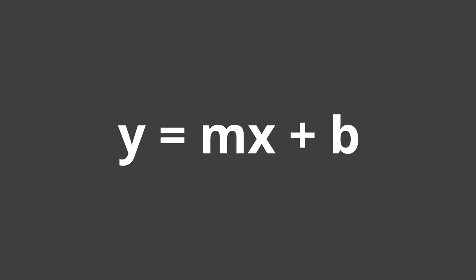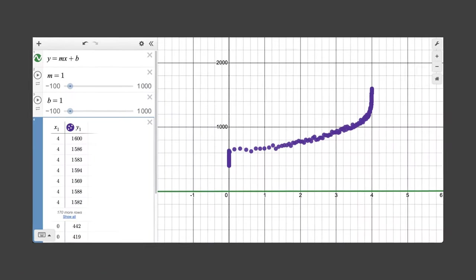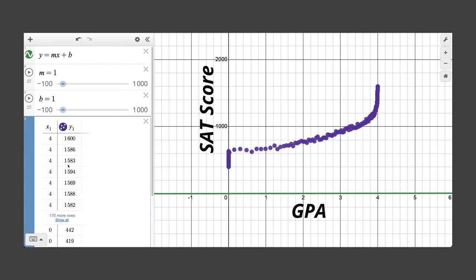Fundamentally, just like any function, the equation takes an input, manipulates it, and gives an output. So, to predict SAT scores based on GPA, we can just play around with the m and b values until we get something that matches up with our data.